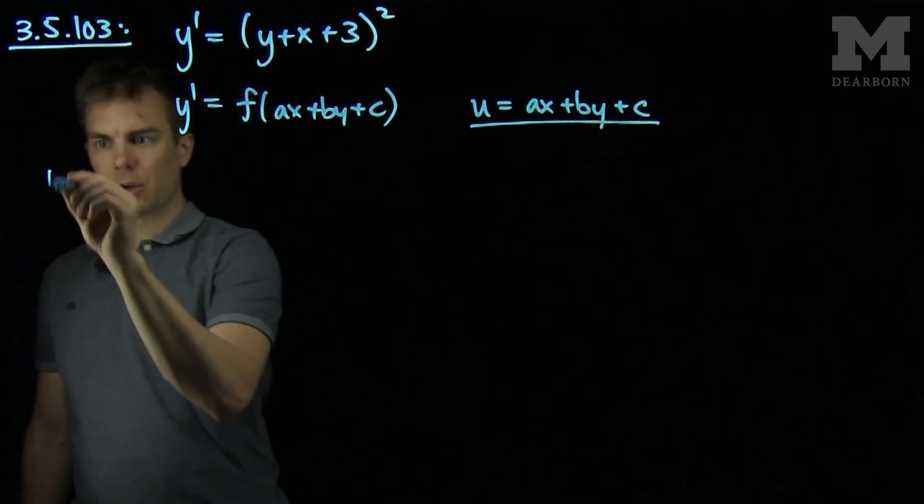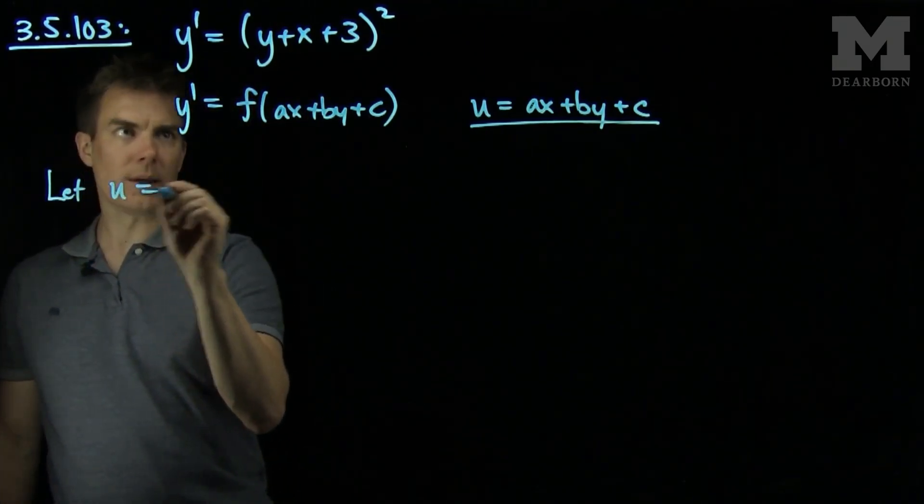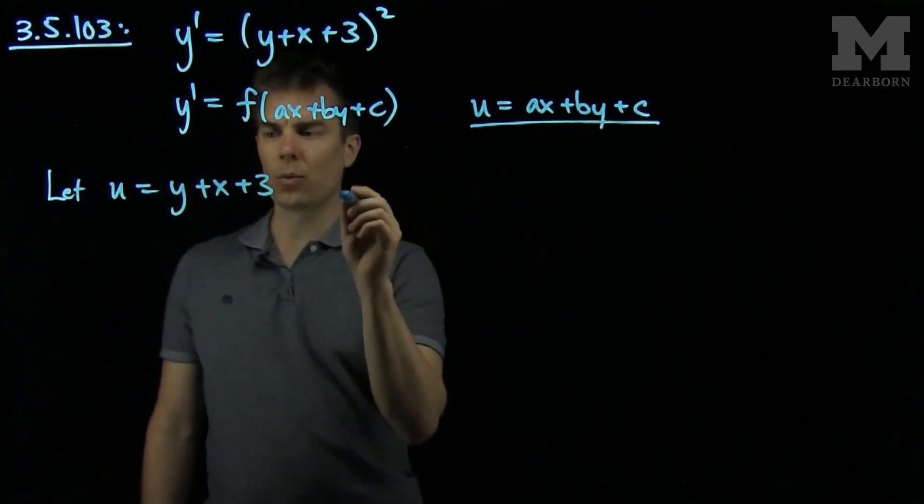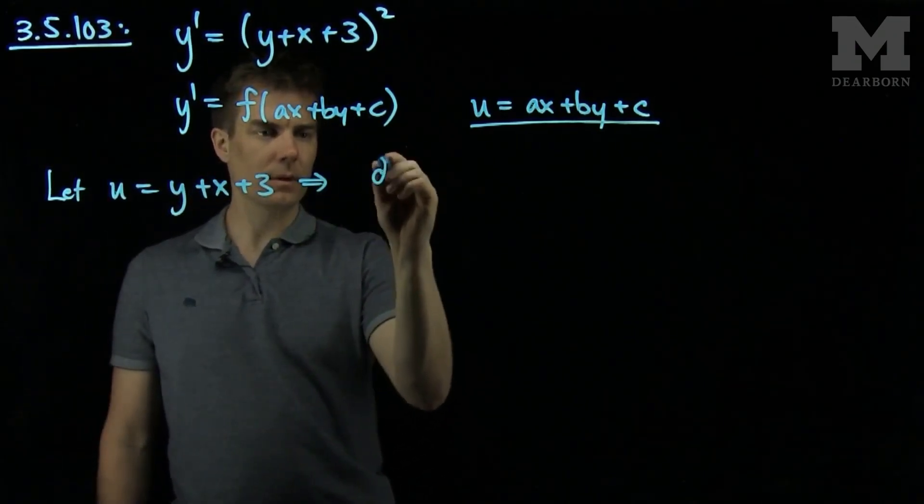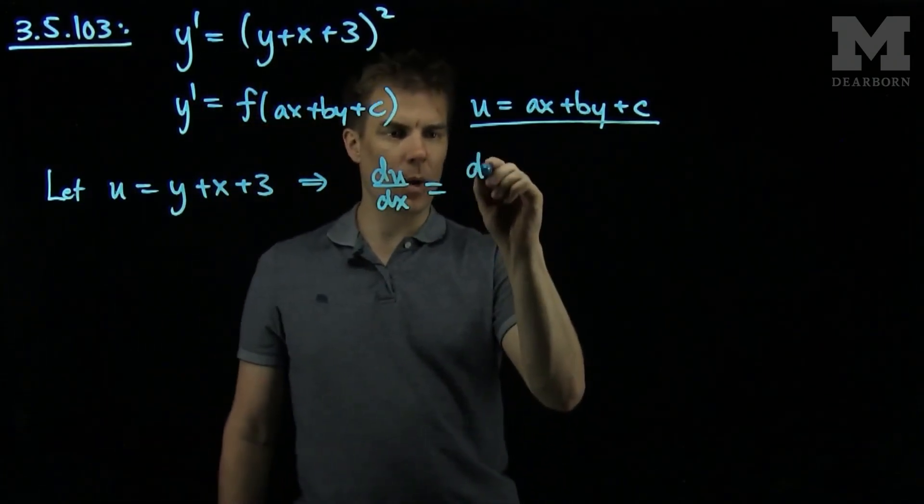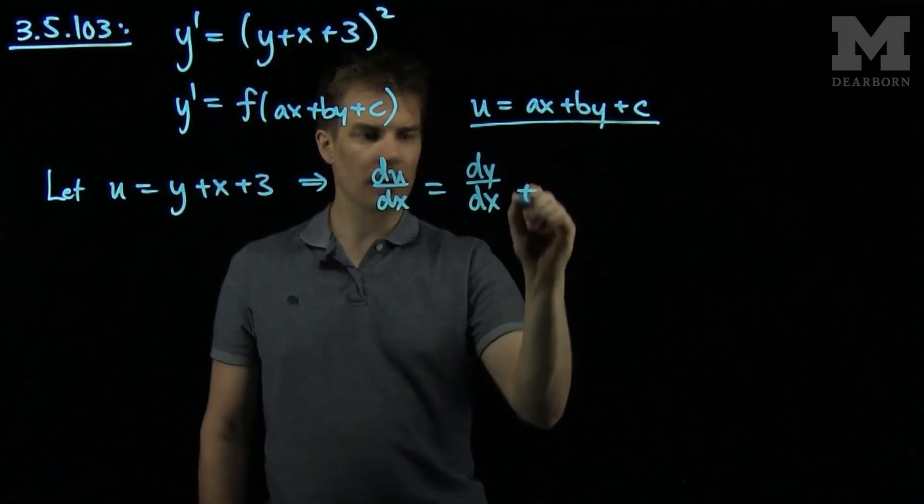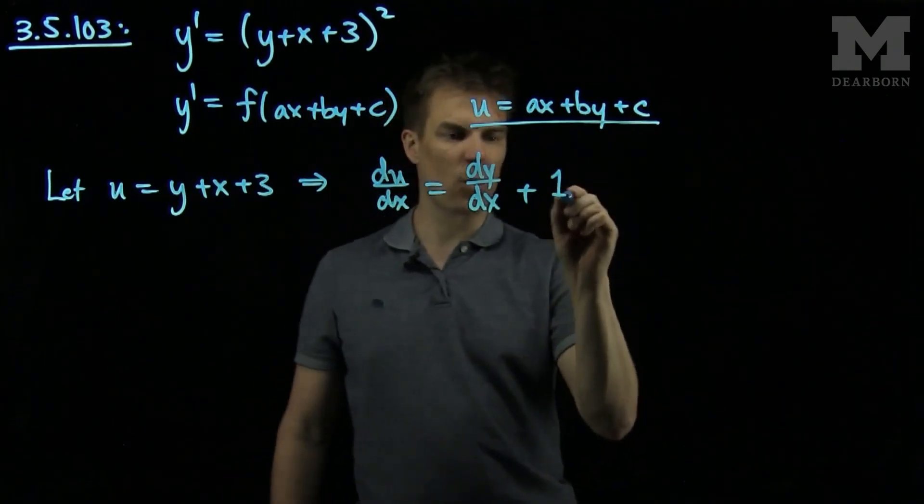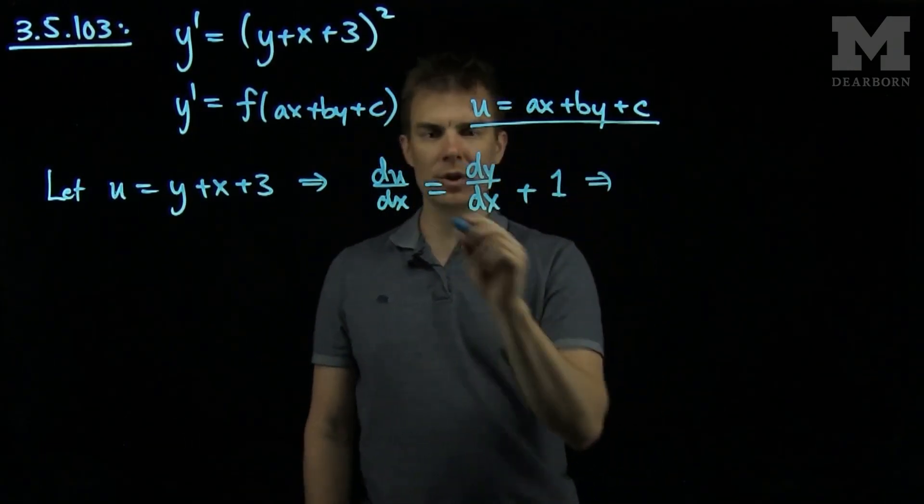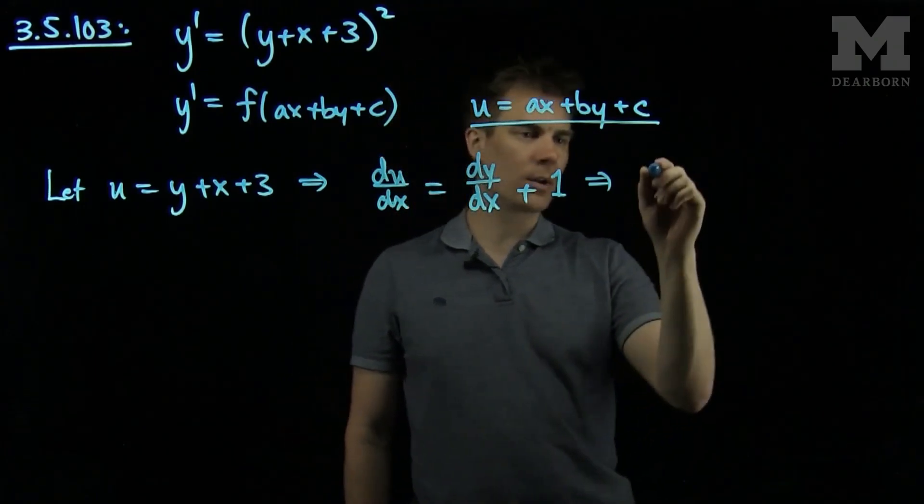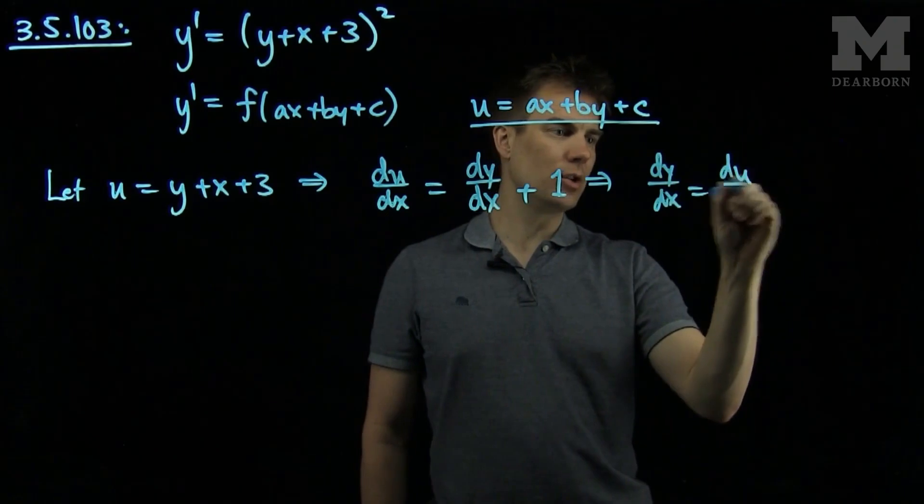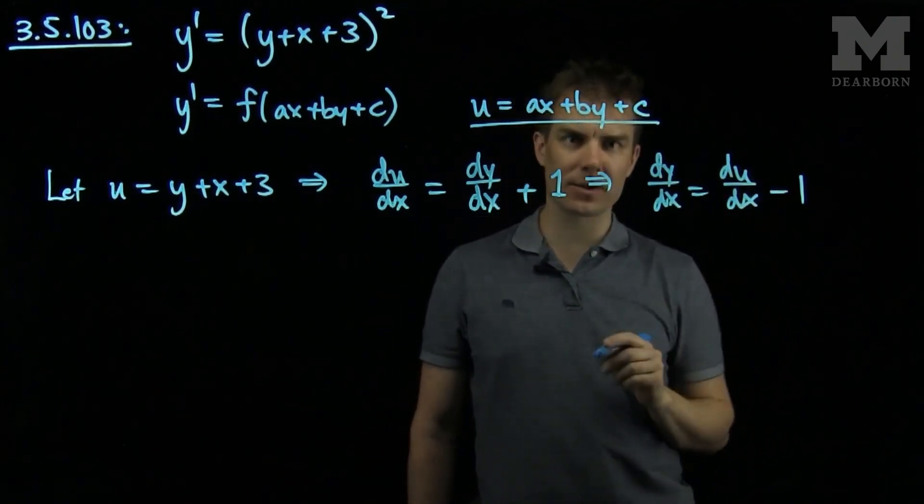In this case, we're going to let u be y plus x plus 3. Then we'll find du/dx. Du/dx will be dy/dx plus the derivative of x, which is just going to be 1, and the derivative of 3 is 0. So this tells me that du/dx is dy/dx plus 1, equivalently dy/dx is du/dx minus 1.